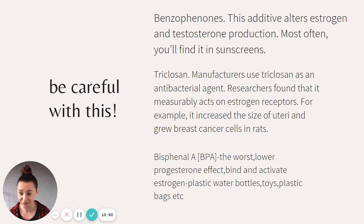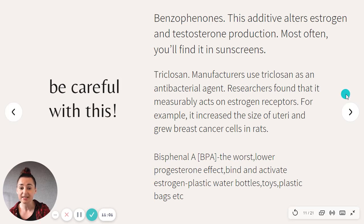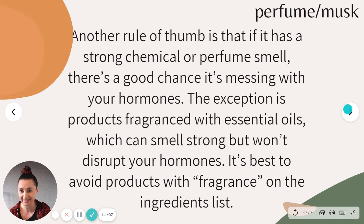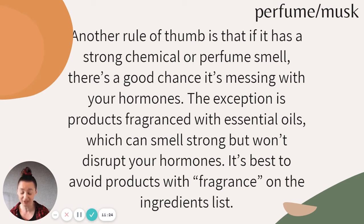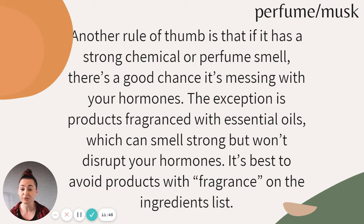Benzophenones affect estrogen and testosterone production — you'll most often find them in sunscreen, so if you use sunscreen daily it's messing with your estrogen levels. BPA (bisphenol A) is the worst one — it lowers progesterone effects and binds to and activates estrogen receptors. It's used in plastic bottles, water bottles, plastic bags, and plastic toys. Another big one — and this was shocking to me because I love perfume — is synthetic musk and fragrance. Everything with a strong chemical or perfume smell has a good chance of messing with your hormones.